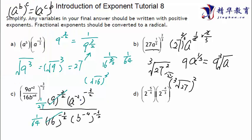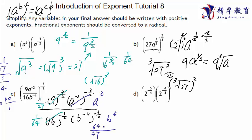For the variable terms: negative 2 times negative three over two — the negatives cancel and 2 and 2 cancel — giving a to the power of 3. And negative 4 times negative three over two gives b to the power of 6. So we have (1 over 27) times a cubed in the numerator, over (1 over 64) times b to the 6th. Dividing by 1 over 64 means multiplying by 64, giving a final answer of 64 over 27 times a cubed b to the 6th.